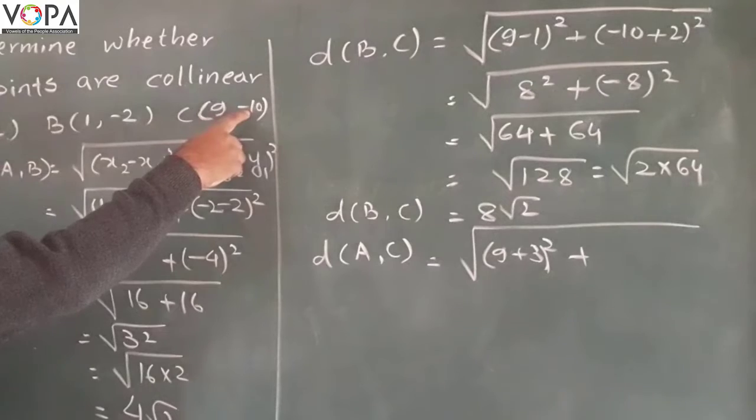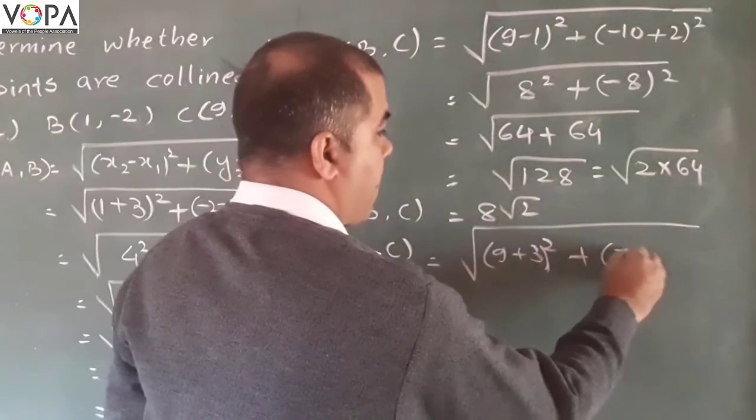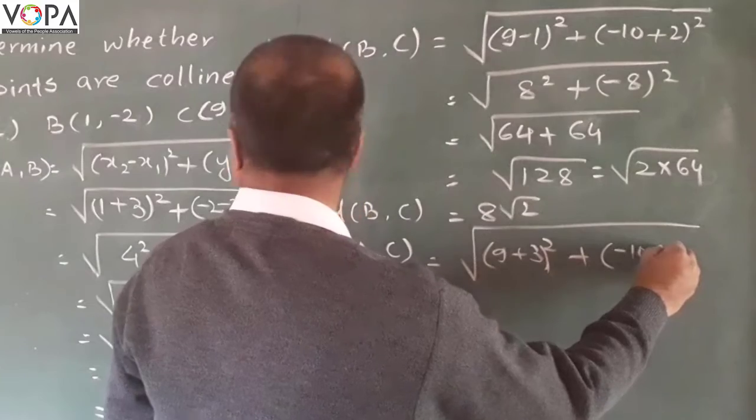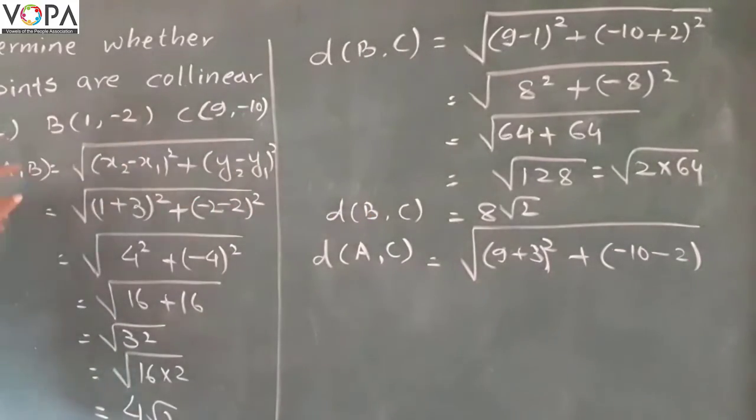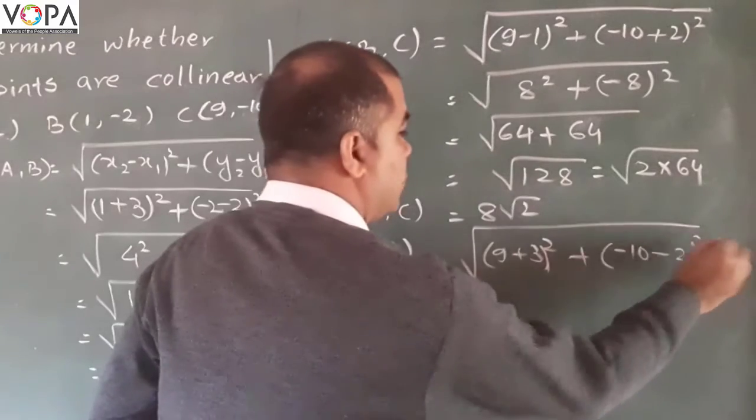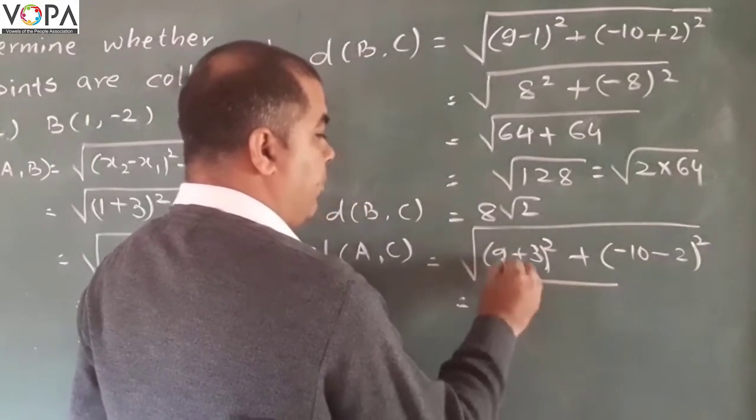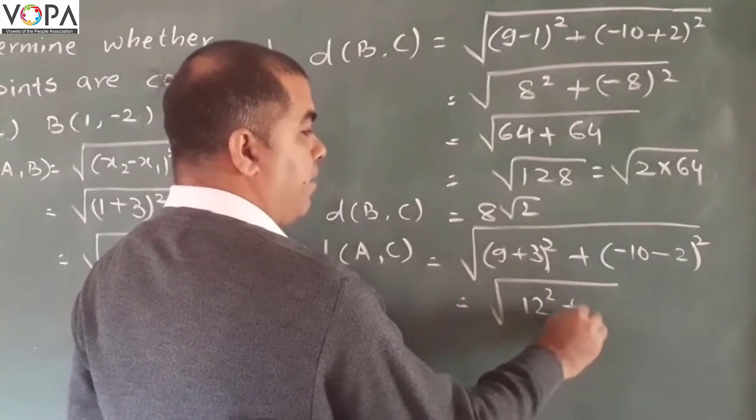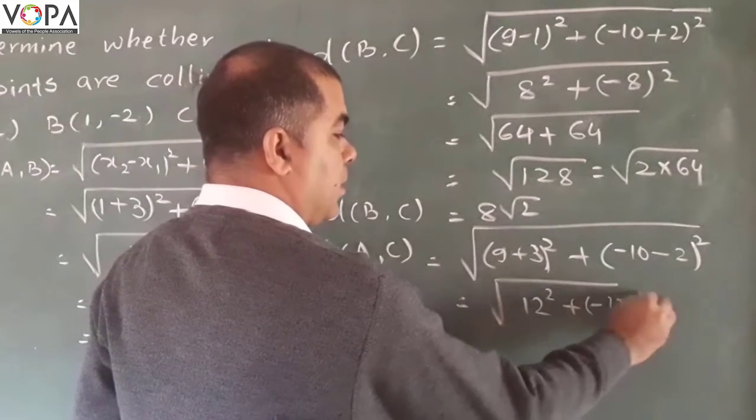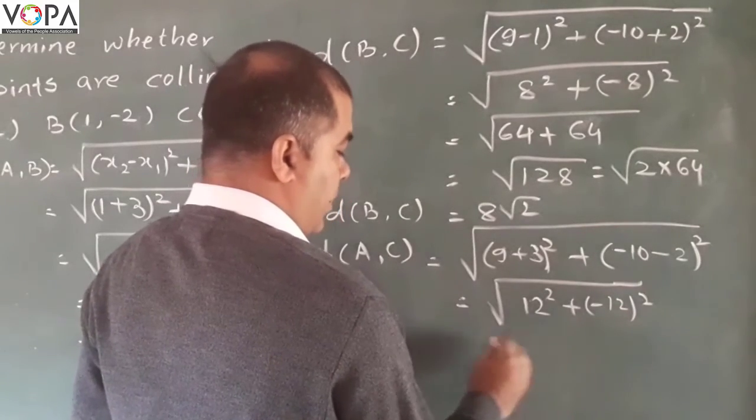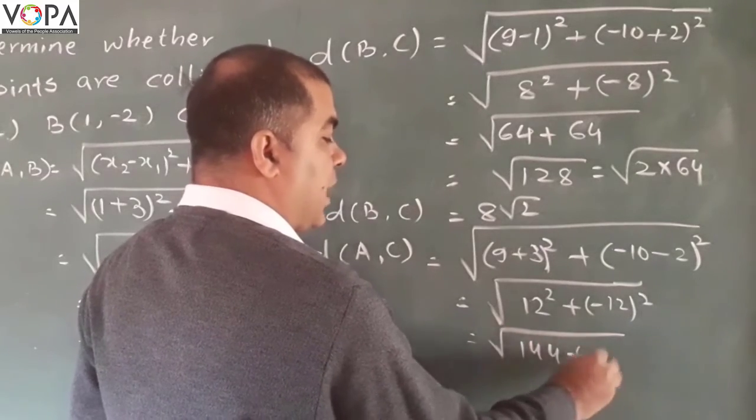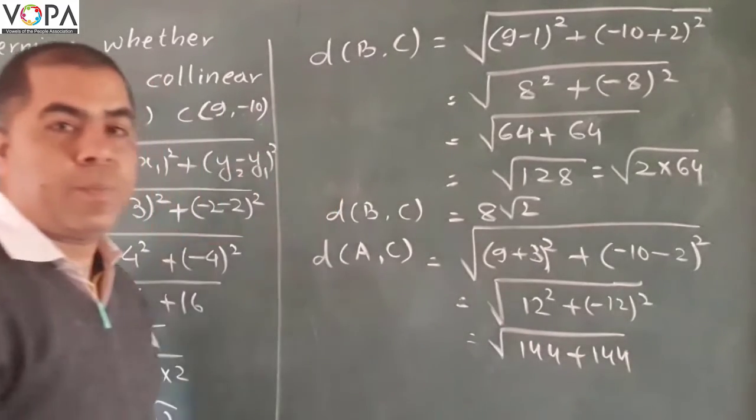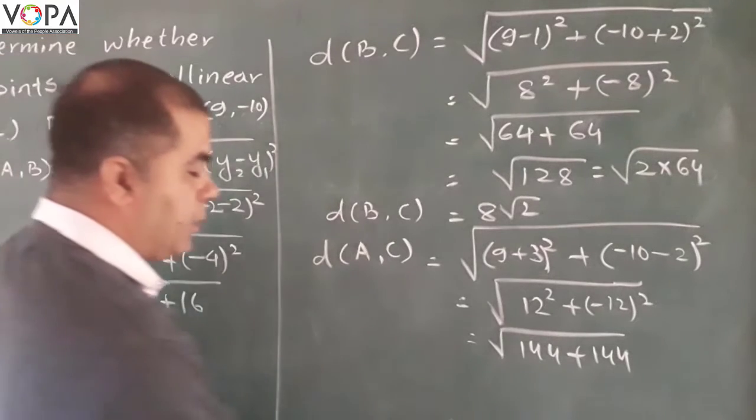It will be 12 squared plus negative 12 squared, plus negative 12 squared. Then we use that: 144 plus 144, and that will be 288.